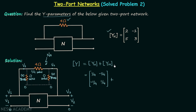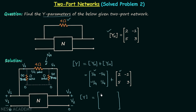Now we add the Y parameters matrix of network N, given in the question, to the matrix of network NA. Performing matrix addition: the first element gives 9/4, the second element gives −5/4, the third element gives 19/4, and the fourth element gives 13/4. This is our final answer. The important thing in this question was to correctly identify the type of interconnection.